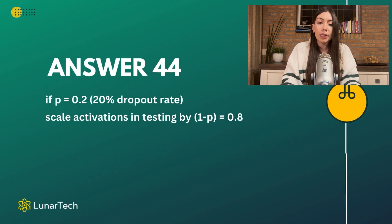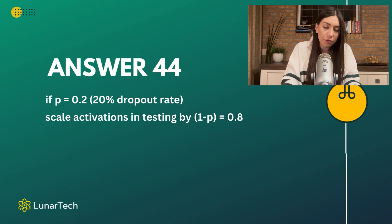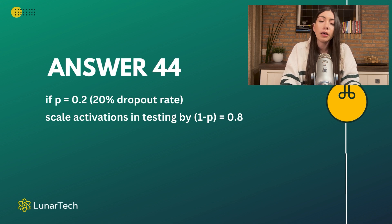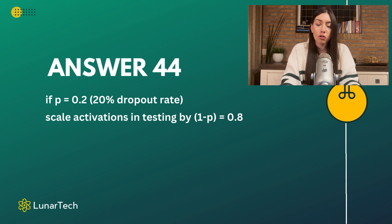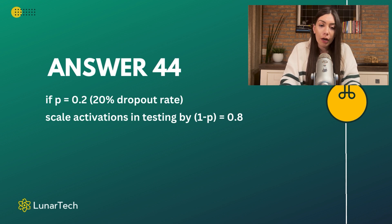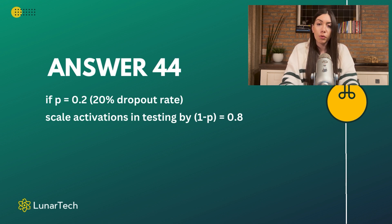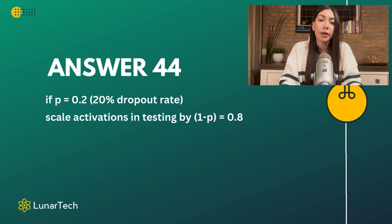Given that p% of the neurons during training are dropped or deactivated, we need to compensate for this and ensure consistency in the input size. What we need to do is scale the activations during testing by 1-p. In this way, we compensate for the probability difference introduced when dropping certain activations.